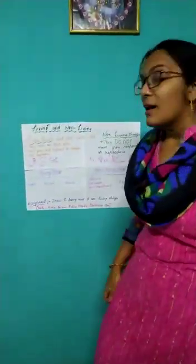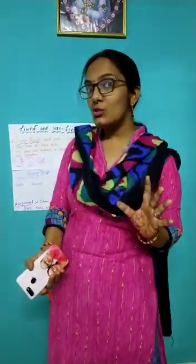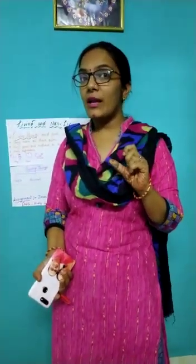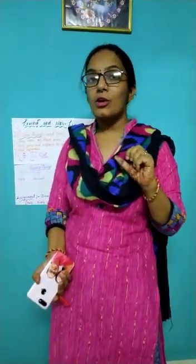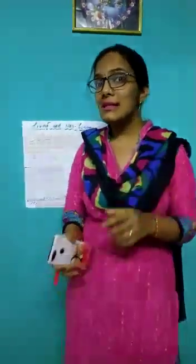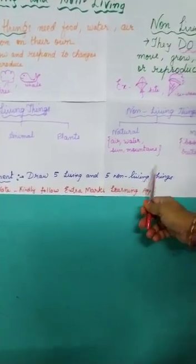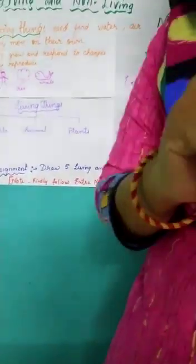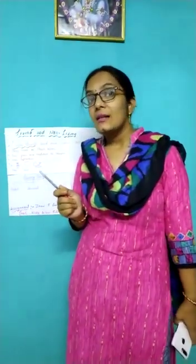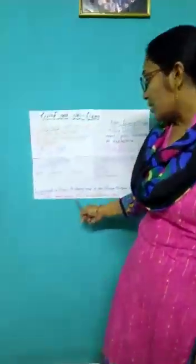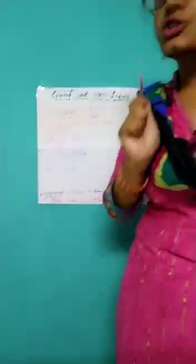Now children, I hope you have understood a basic idea about living and non-living. I am giving you a home assignment — drop five living and five non-living things. This you can do at the comfort of your home and you will enjoy doing it. And don't forget to follow the Extra Marks Learning App. You will definitely enjoy it. Thank you, children. Have a good time.